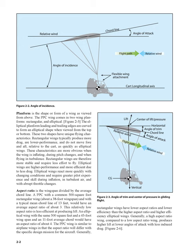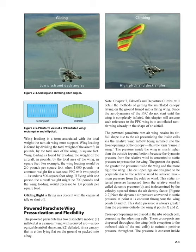Elliptical wings are higher performance and more efficient due to less drag. They react more quickly with changing conditions and require greater pilot experience and skill during inflation, in turbulent air, and with abrupt throttle changes. Aspect ratio is the wingspan divided by the average cord line. A PPC with a common 500 square foot rectangular wing, about a 38-foot wingspan and a typical mean cord line of 13 feet, would have an aspect ratio of about 3. An elliptical wing with the same 500 square feet, a 45-foot wingspan, and an 11-foot average cord would have an aspect ratio of about 4. Generally, a high aspect ratio wing produces higher lift at lower angles of attack with less induced drag.